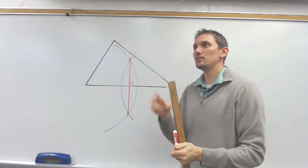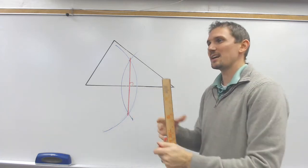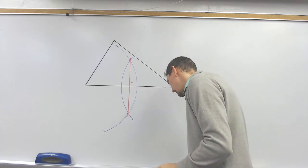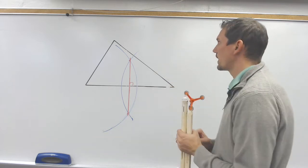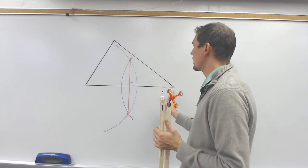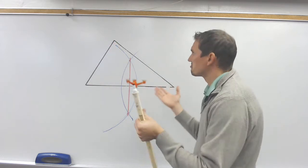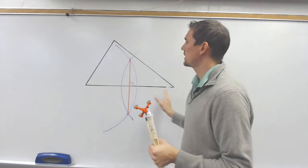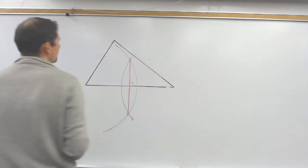So that's one of them. I need two of them, and where they intersect, that is where the circumcenter is. So I have to do this whole process over again with a different side, and I can pick the short side or I can pick the longer side. It's up to you. I did the longer side here. I'm going to try the shorter side. Maybe it'll be a little bit better.